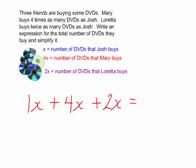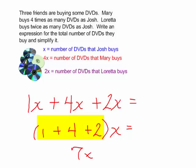What we learned about the distributive property is that this is the same as 1 plus 4 plus 2, all of that, times x. And we could simplify this parenthesis. 1 plus 4 plus 2 is 7, so we now have 7x.